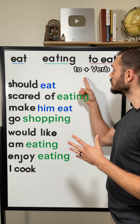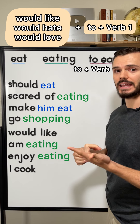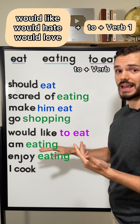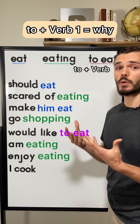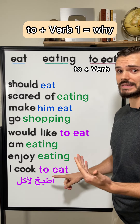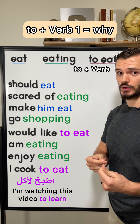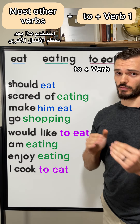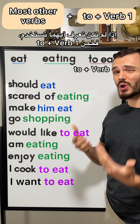We use 'to' plus verb 1 after 'would like', 'would hate', 'would love' — for example, 'I would like to eat', 'I would like to go'. We also use it to say why — 'I cook to eat', 'I'm watching this video to learn'. And we use it after most other verbs — 'I want to eat'.